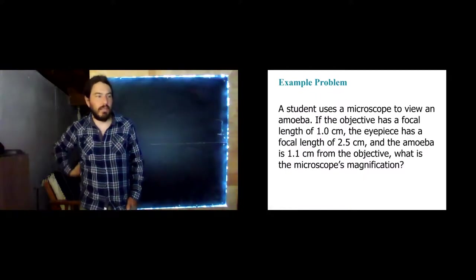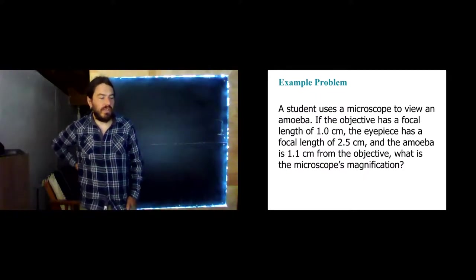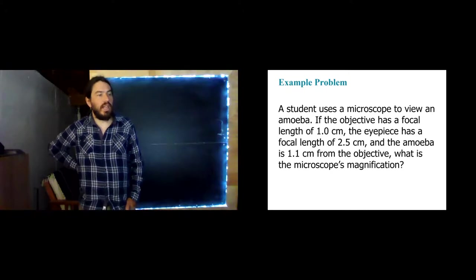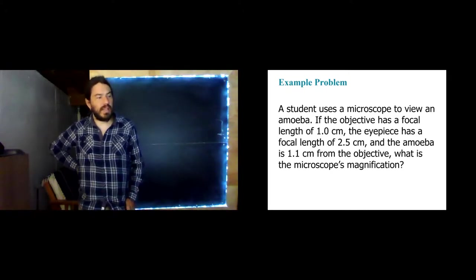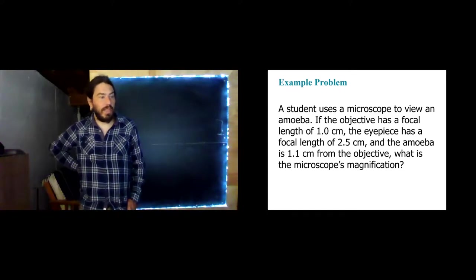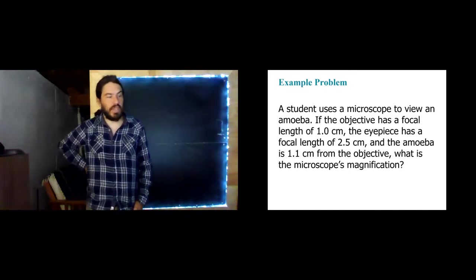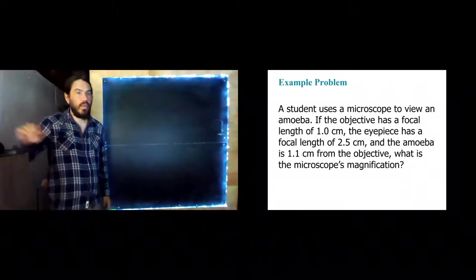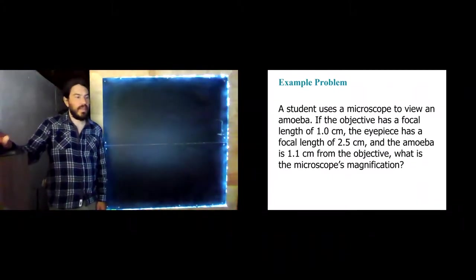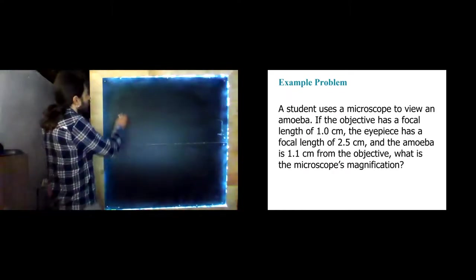Okay, let's do a quick example. A student uses a microscope to view an amoeba. If the objective has a focal length of one centimeter, the eyepiece has a focal length of 2.5 centimeters, and the amoeba is 1.1 centimeters from the objective, what is the microscope's magnification? Well, let's just go ahead and see. We're going to want to use this equation right here.